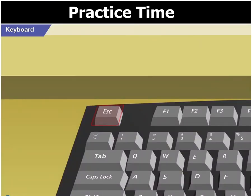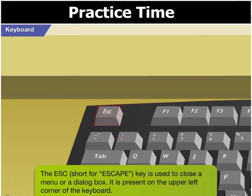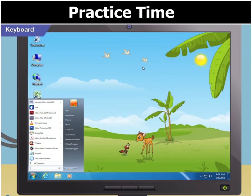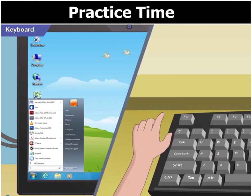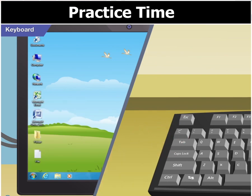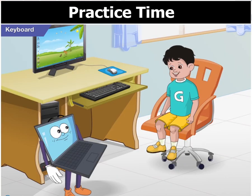What about this ESC key? The ESC key is used to close a menu or a dialog box. It is present on the upper left corner of the keyboard. If you do not want to work with a given menu, say the start menu, just press the ESC key and it will disappear. Cool, Goggle. Thanks for helping me with this keyboard.